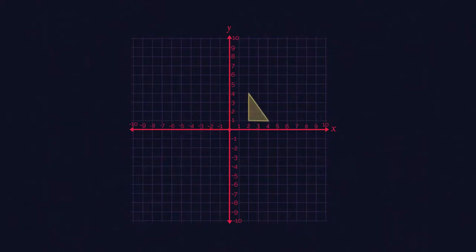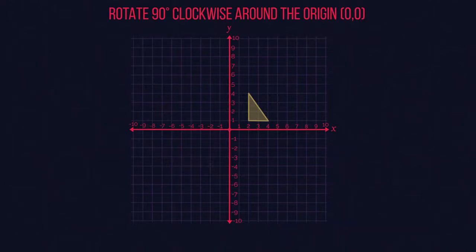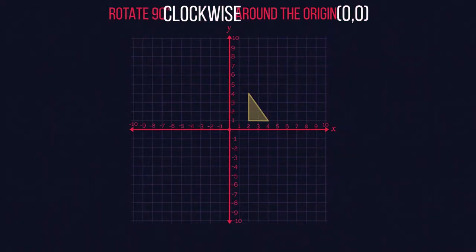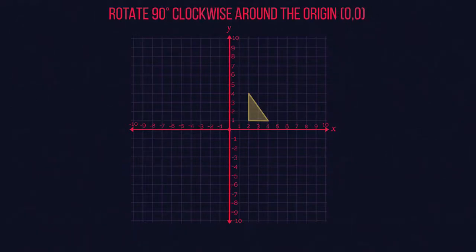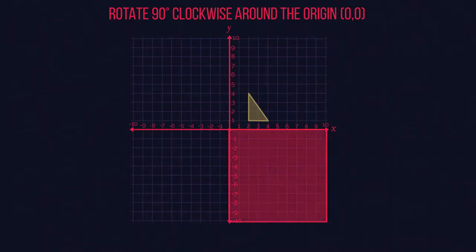Let's look at an example. Let's rotate this triangle through a 90 degree turn clockwise around the origin. Rotation questions always include an angle, a direction, and a rotation point. 90 degrees clockwise means our shape is going to end up in this quadrant. But where exactly?